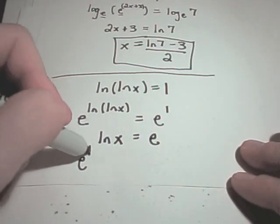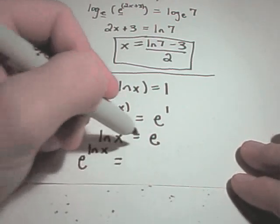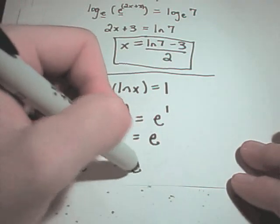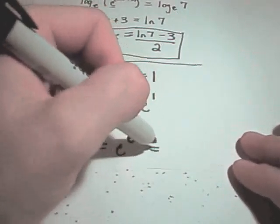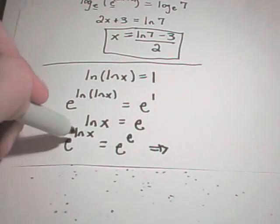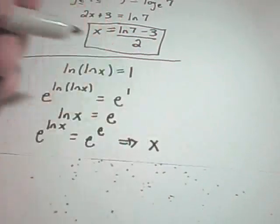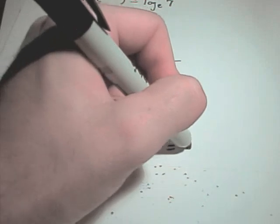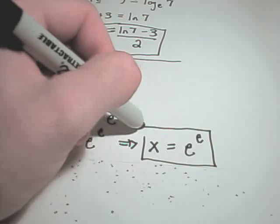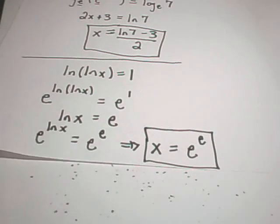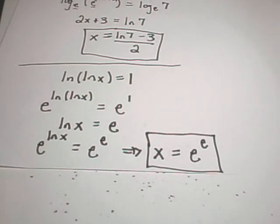And now I can just do this procedure one more time and take e, raise it to the ln of x. On the right, I'll now have e raised to the e. And this simply says on the left side, e raised to the ln of x is x. And on the right side, well, e raised to the e is e. Okay, so kind of a funny looking number, e raised to the e power, but in this case, that's going to be our solution.